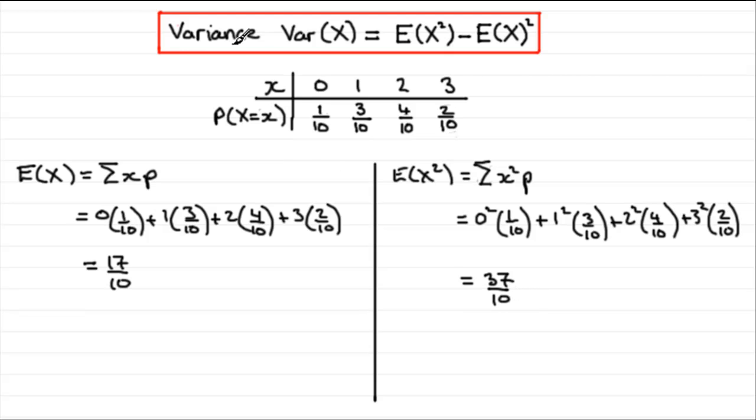So when it comes to working out the variance of x, what we've got here is the variance of x. We know is E(x²), so that's 37/10, and then we need to subtract E(x) all squared, so 17/10 all squared. If you work that out in your calculator, you end up with 81/100.